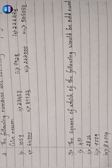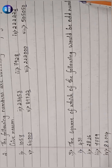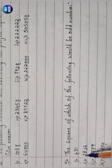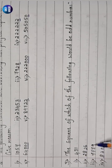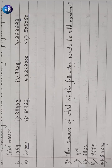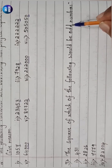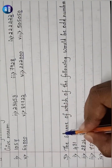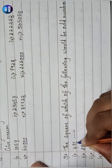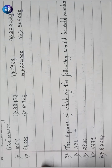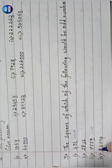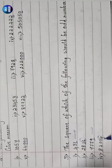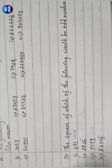Question 3: The square of which of the following numbers would be odd? The numbers given are 431, 2826, 7779, and 82004. Using the property that the square of an odd number is always odd: 431 ends in 1 (odd) and 7779 ends in 9 (odd), so their squares will be odd numbers. 2826 ends in 6 (even) and 82004 ends in 4 (even), so their squares will be even.